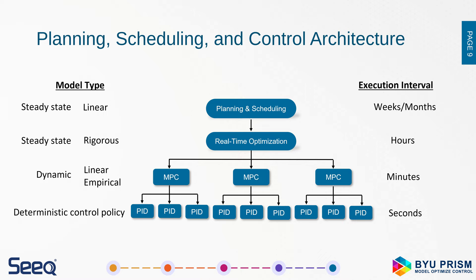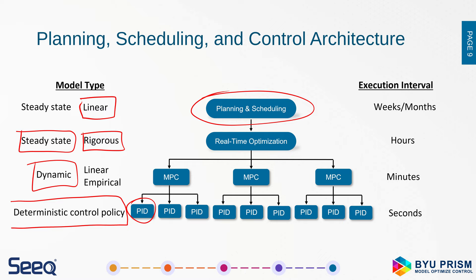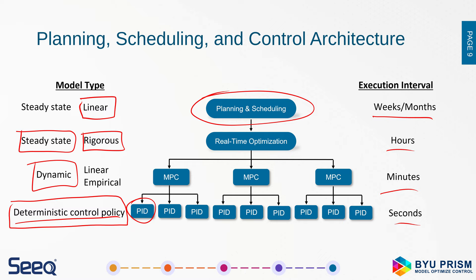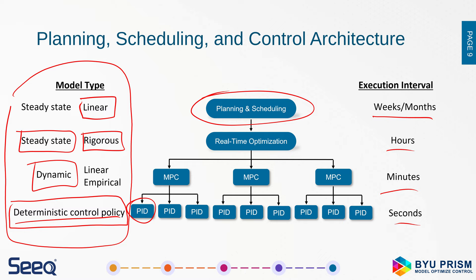There are many different types of models used across the hierarchy, from planning and scheduling all the way down to valves and actuators and PID controllers that control flows, pressures, and temperatures. We have anywhere from linear to rigorous models, and also steady-state or dynamic models. Some are not even models or optimizers — they're just a deterministic control policy. Execution intervals vary from weeks and months down to hours, minutes, and seconds. We often have a mix of these types, and the question is: can we combine elements to give improved extrapolation and performance with less data?